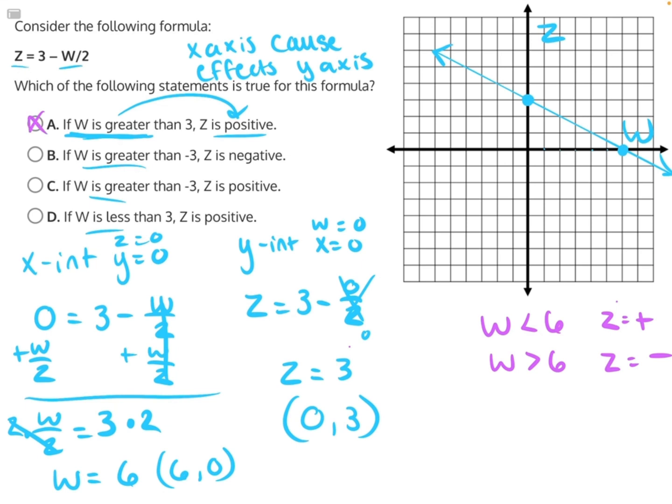B says if w is greater than negative 3, which would be over here, z is negative. Well, let's put that up on our graph and say greater than, and so all of these values to the right are positive until they become negative later on. So it's not negative the whole time, making B incorrect.